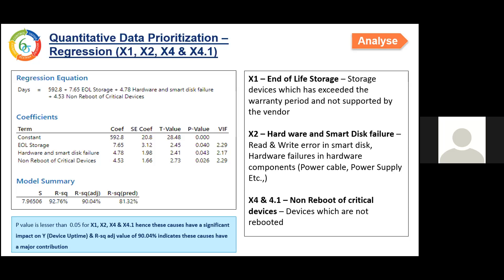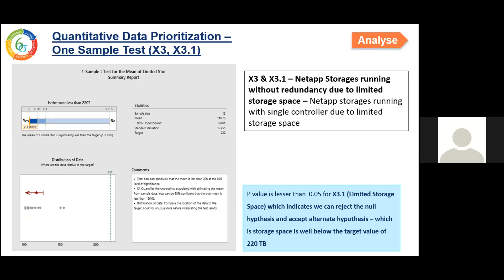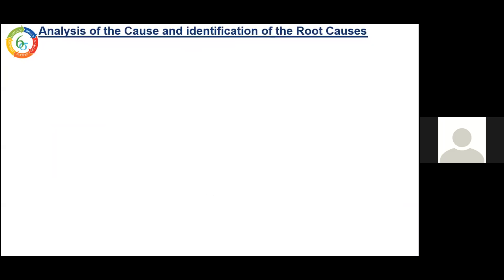To further analyze these Xs and see whether they significantly contribute to our Y, we performed regression. From the regression, we can see that p-value is less than 0.05 for X1, X2, X4, and X4.1, and the R-squared adjusted value of 90.04 indicates these Xs have a major contribution to our Y. Another statistical tool we used is a one-sample t-test. We had data of NetApp storages running with limited storage space. We took 12 weeks of storage space data — the minimum storage space required was 220 TB. We did the one-sample t-test to check whether minimum storage space was available, and through the p-value we can tell the storage space is below target and not sufficient.